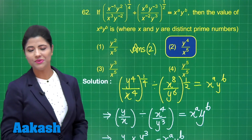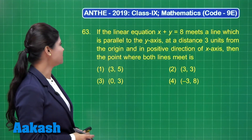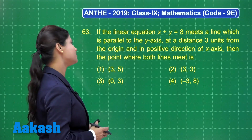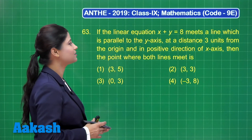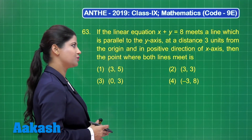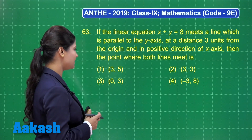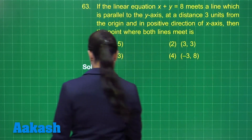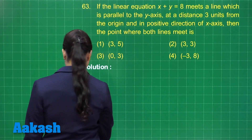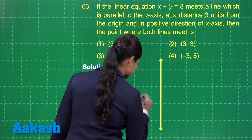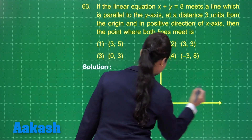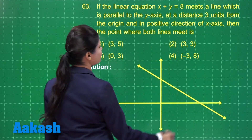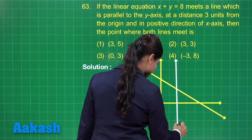Next question: if the linear equation x plus y equal to 8 meets a line which is parallel to the y axis at a distance of 3 units from the origin in the positive direction of the x axis, then the point where both lines meet is — out of these 4 options. We are talking about the line x plus y equal to 8 and another line parallel to the y axis plotted on the Cartesian plane.